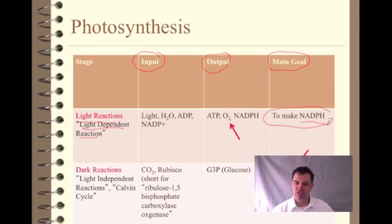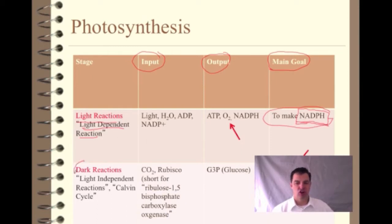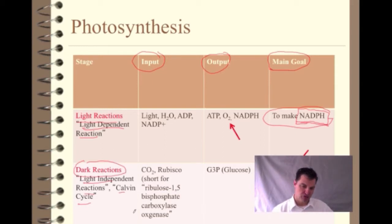NADPH should look sort of familiar, but it's actually slightly different than the NADH that we made in cellular respiration. Then we have the dark reactions, which can also be called the light independent reactions or the Calvin cycle — you should be familiar with all three of those terms. When you're reading, you want to make sure you understand those are talking about the same thing.